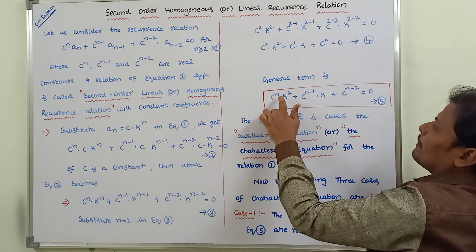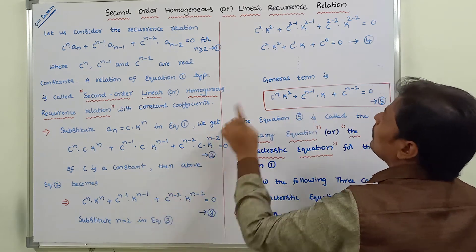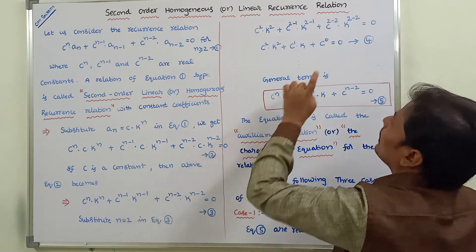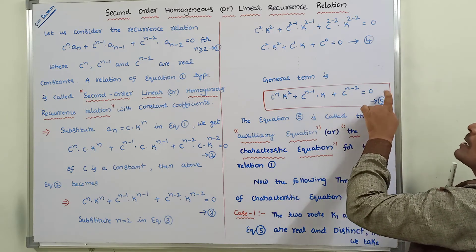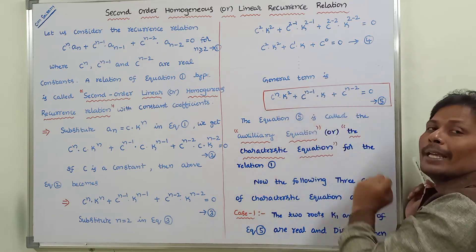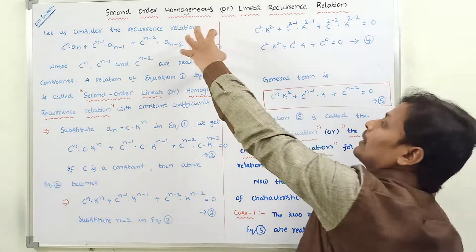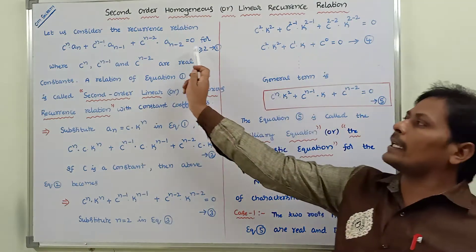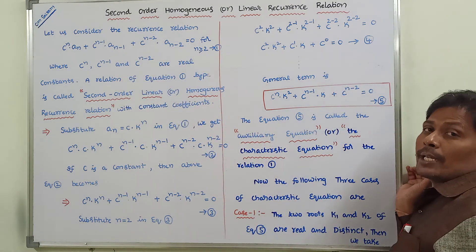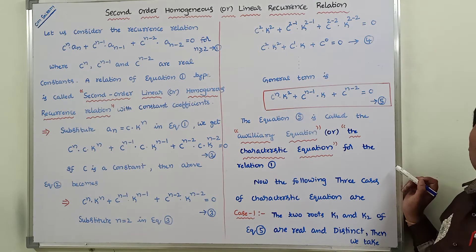With n equal to 2, c_n gives k^2, c_(n-1) gives c_1, and c_(n-2) gives 0. So we arrive at equation 5: c_n·k^2 plus c_(n-1)·k plus c_(n-2) equals 0. This equation is called the auxiliary equation or characteristic equation of relation 1.